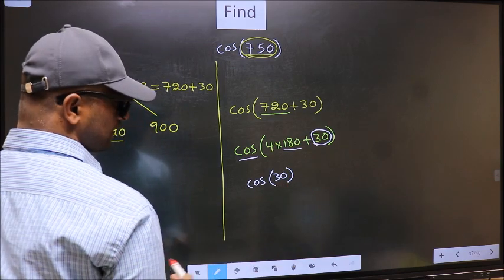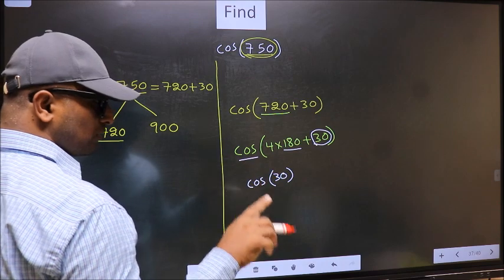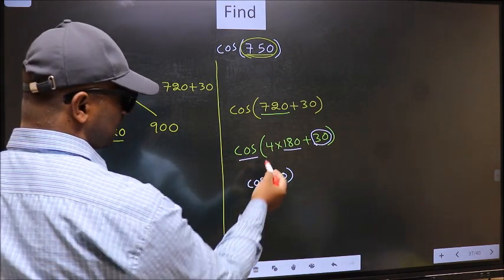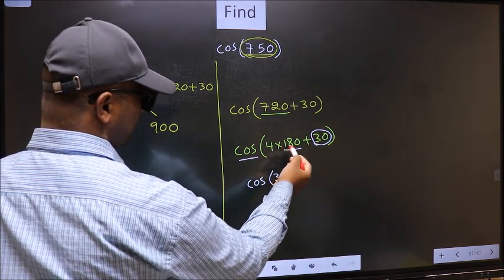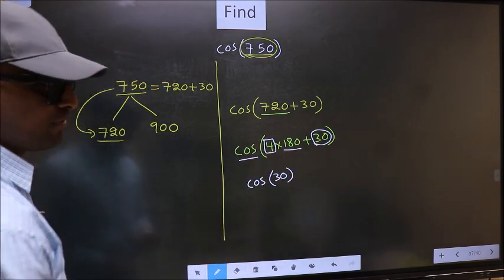Now the question is, will we get here plus or minus? To answer that, we should look at the number before 180. That is 4. And 4 is even.